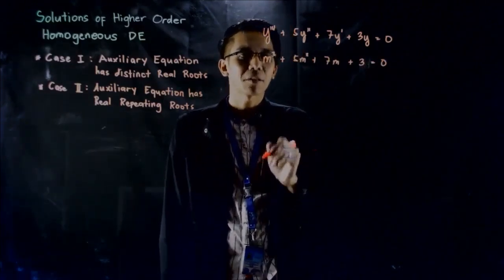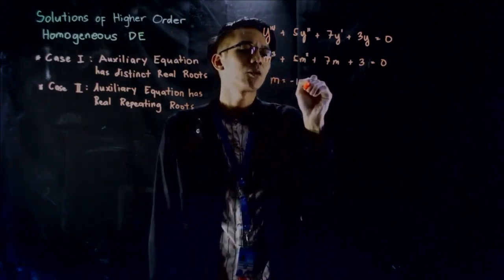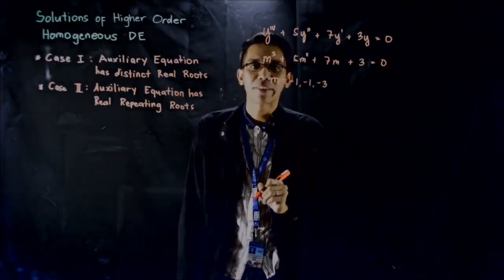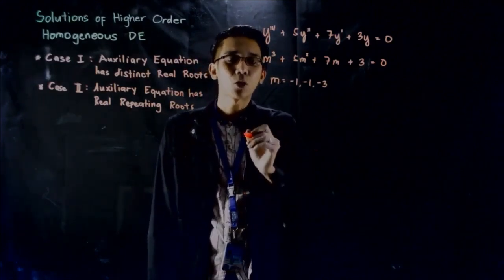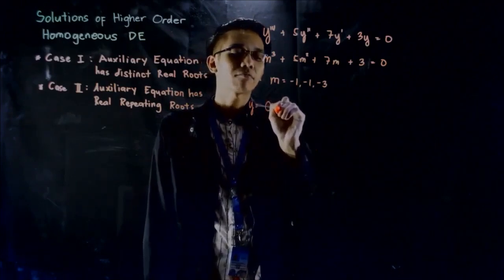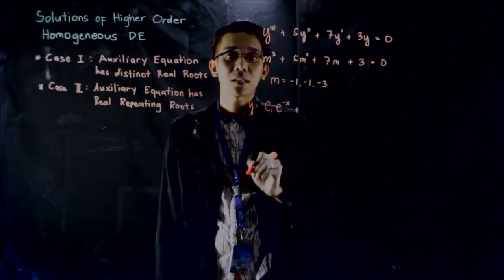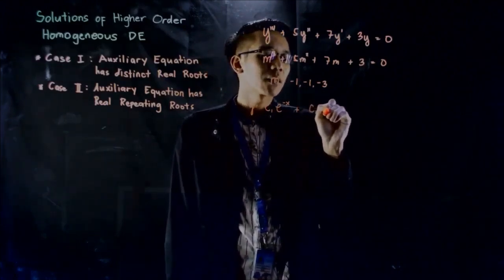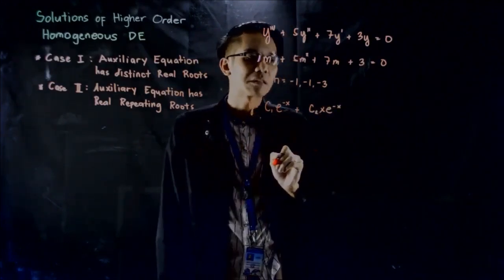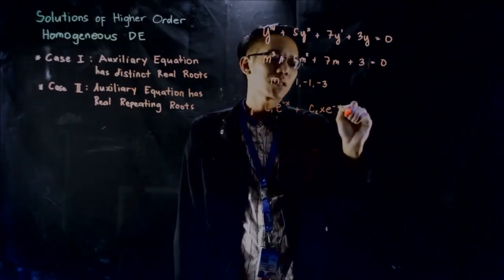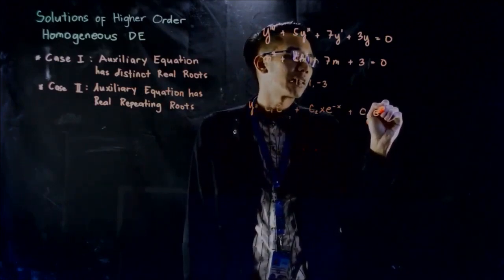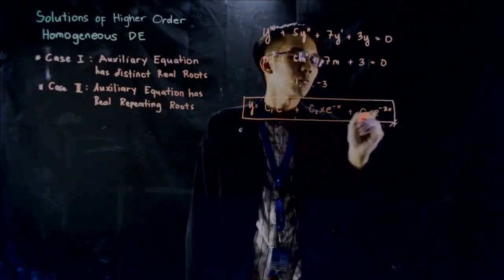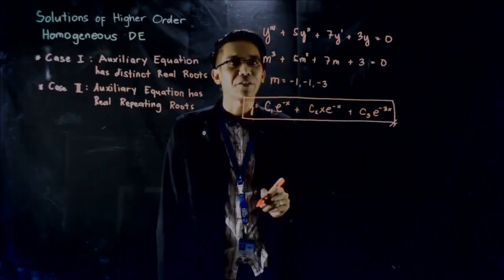Solving for the values of m, we find m equals negative 1 with a multiplicity of 2, and m equals negative 3. This is a combination of Case 1 and Case 2. The solution is y equals c₁e^(−x) plus c₂xe^(−x) — since the root negative 1 repeats — plus c₃e^(−3x). We have three arbitrary constants, which equals the order of the given differential equation.